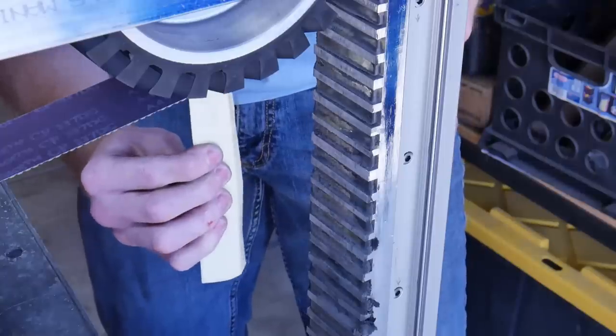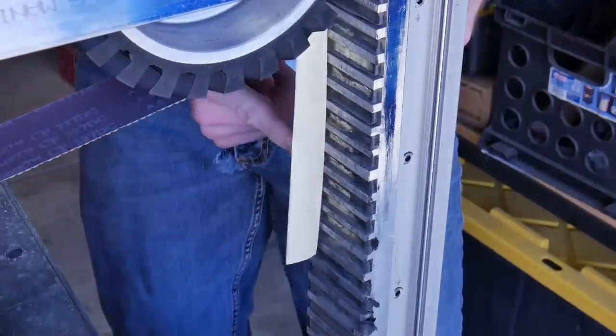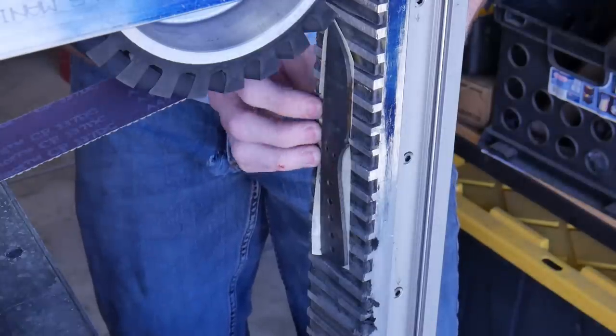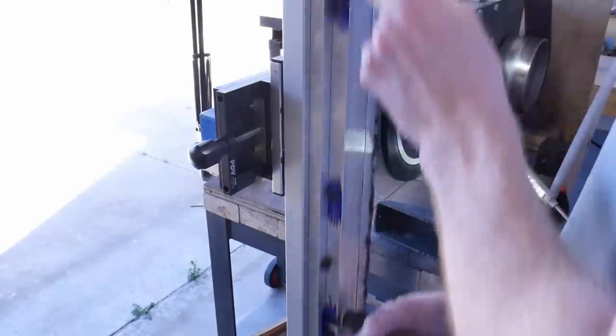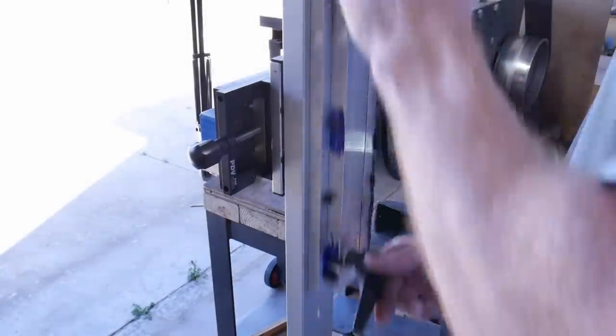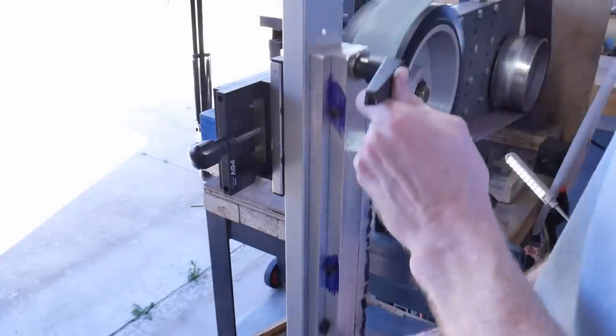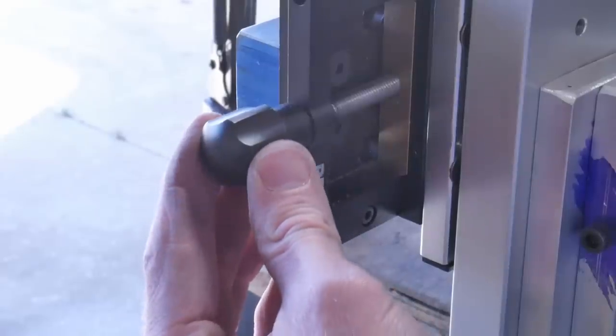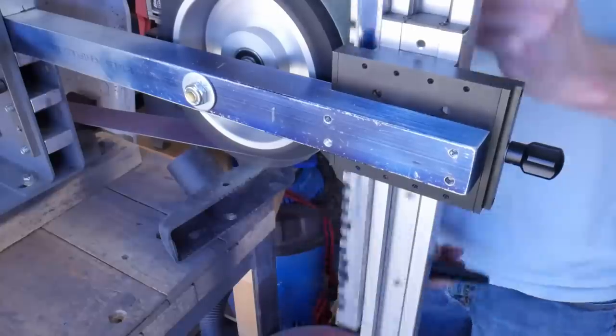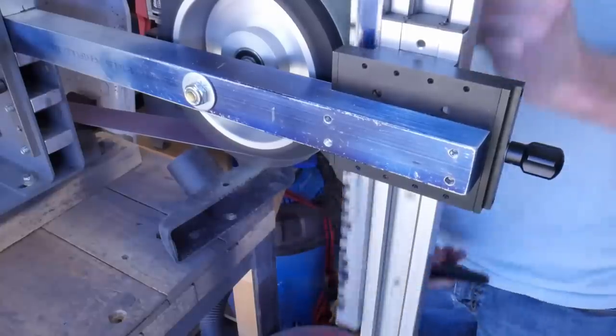I start off with a 120 grit belt and then moved up to an A45 Trisac which is around a 360 grit finish. The turns on this table are very minute as I'm moving towards the wheel, so that turn right there is only about one and a half to two thousandths of an inch.